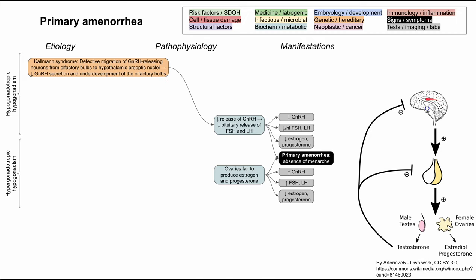If you don't have the neurons that secrete GnRH, this leads to decreased GnRH and hypogonadotropic hypogonadism. The other characteristic symptom of Kallmann syndrome is anosmia or hyposmia — no sense of smell or a decreased sense of smell — because the GnRH-secreting neurons and the olfactory neurons migrate together. If they don't migrate, you'll have low GnRH and a poor sense of smell.